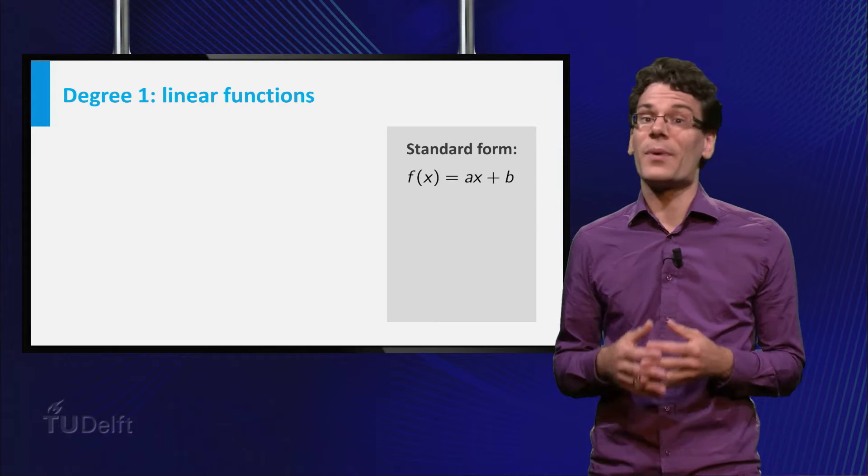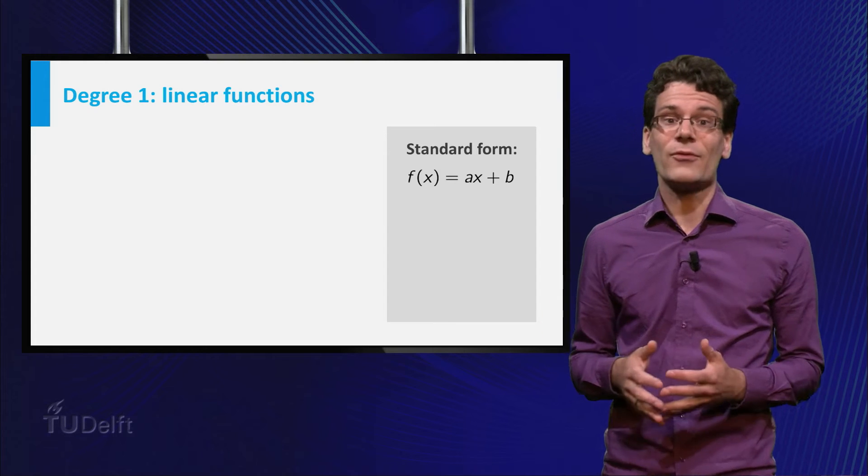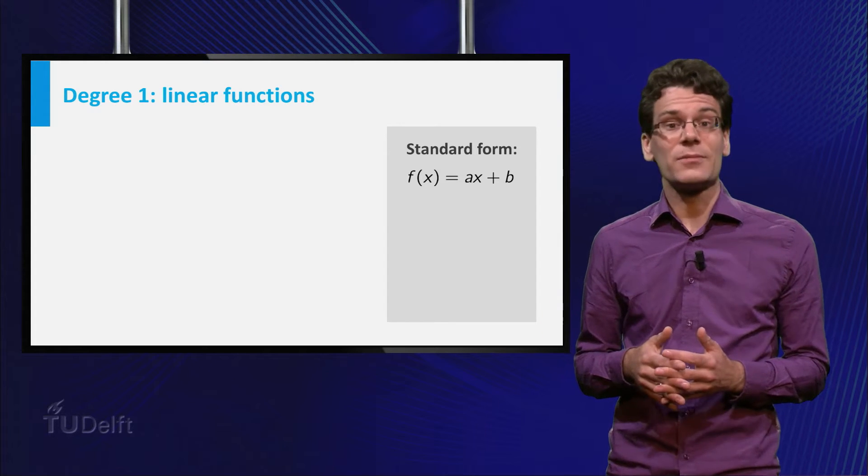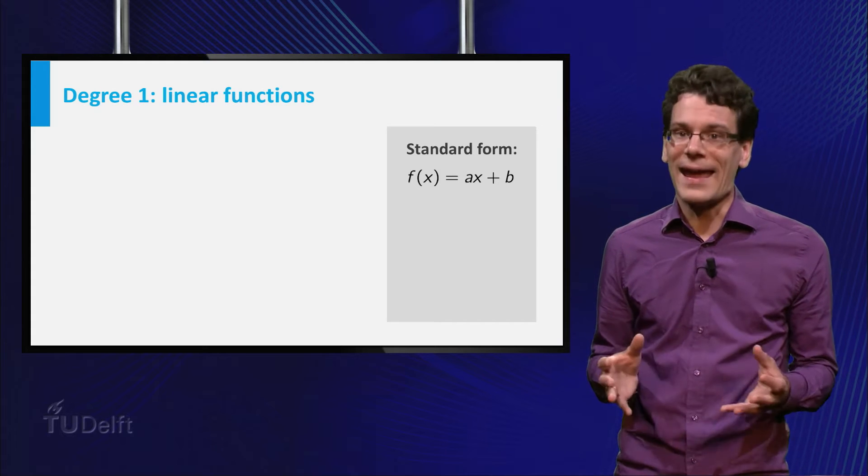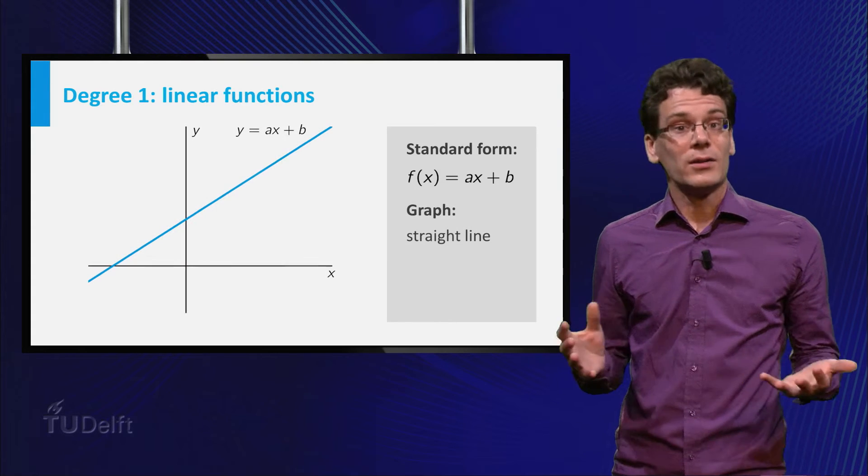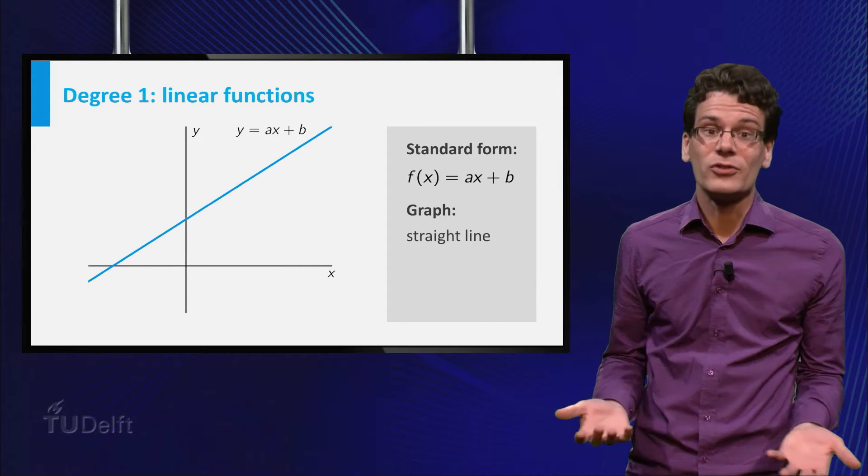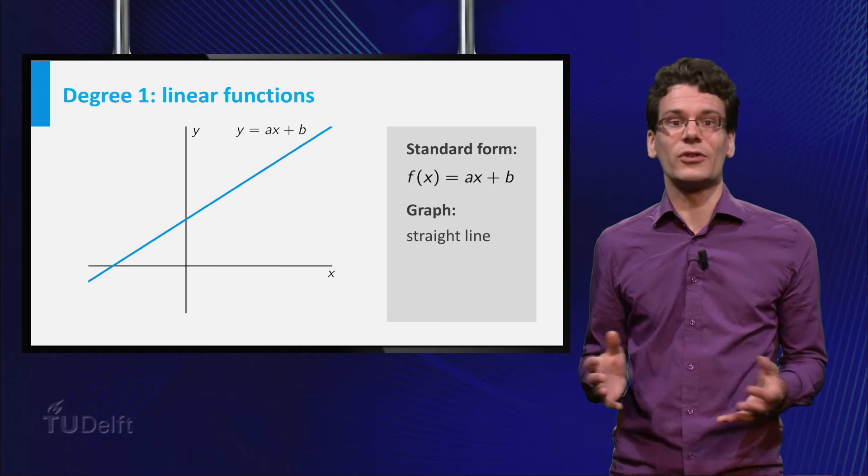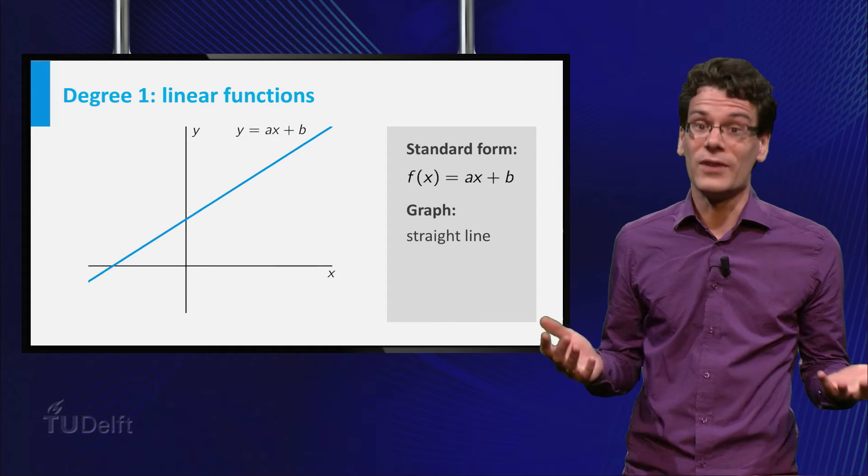Let's make this a little bit more exciting by passing to degree 1. Degree 1 polynomials have the form f of x equals a times x plus b, where a and b are constant numbers and a is non-zero. The graph of a degree 1 polynomial function is a straight line. That is why these functions are also called linear functions. By the way, also constant functions are examples of linear functions.